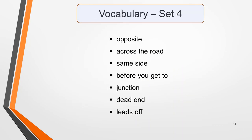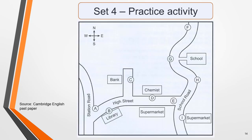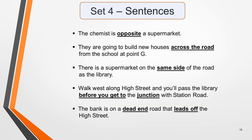Vocabulary set 4: opposite, across the road, same side, before you get to, junction, dead end, leads off. The chemist is opposite a supermarket. They are going to build new houses across the road from the school at Point G. There is a supermarket on the same side of the road as the library. Walk west along High Street and you'll pass the library before you get to the junction with Station Road. The bank is on a dead end road that leads off the High Street. And here they are written down.